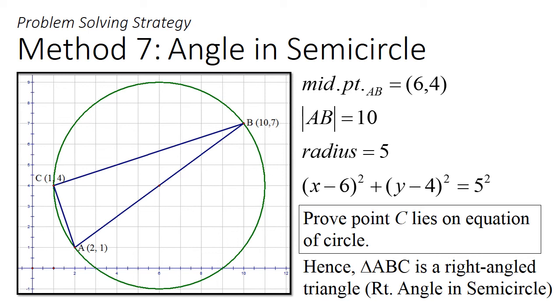However, the method that I like the most is to really think out of the box, but in this case, to think out of the triangle, and that is to construct a circle with diameter AB. You can find the midpoint of AB and the radius of this circle. This allows you to construct the equation of the circle and prove that point C lies on that equation.